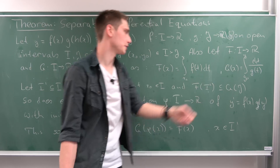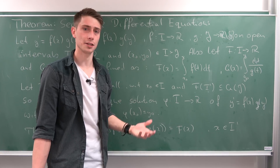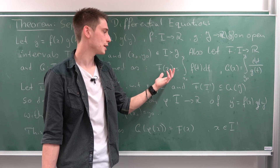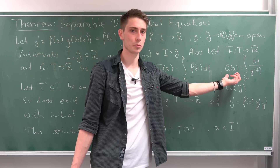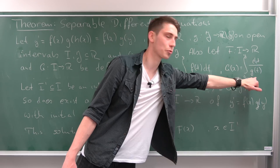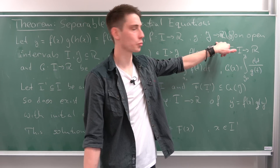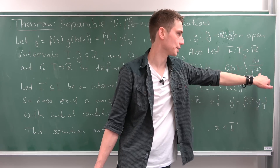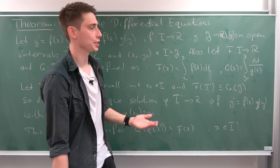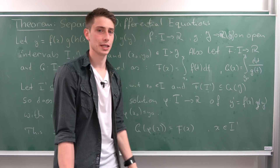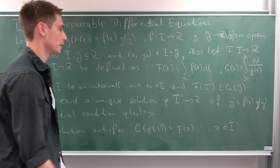We have two primitives of those functions f and g, defined as follows: capital F in terms of x is this right here, and capital G in terms of x is this right here. Here's the reason why we don't want g to be equal to zero — because it's a rational function with this g in the denominator, and it would cause problems otherwise.